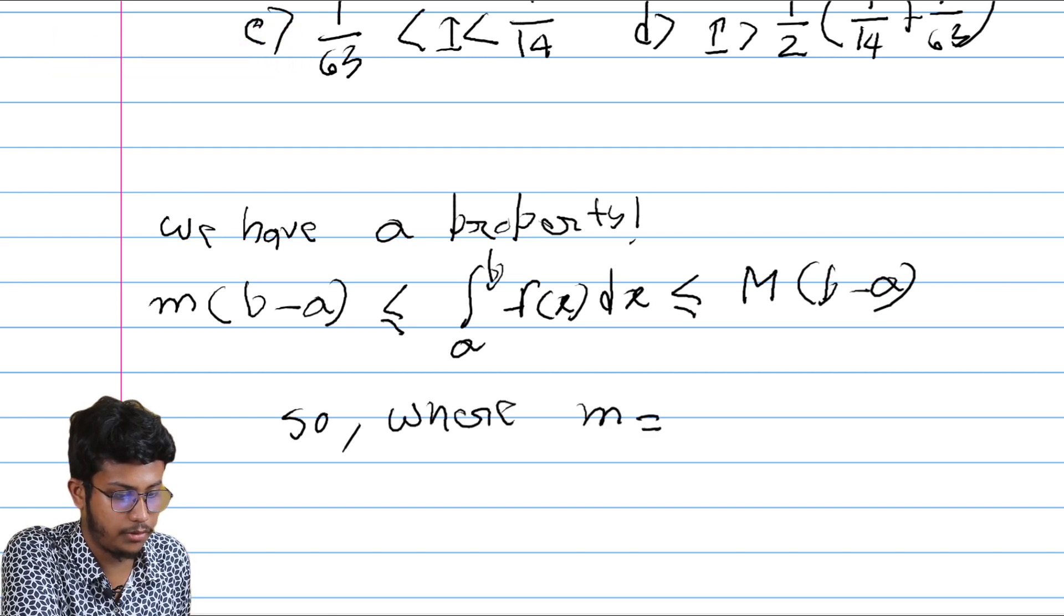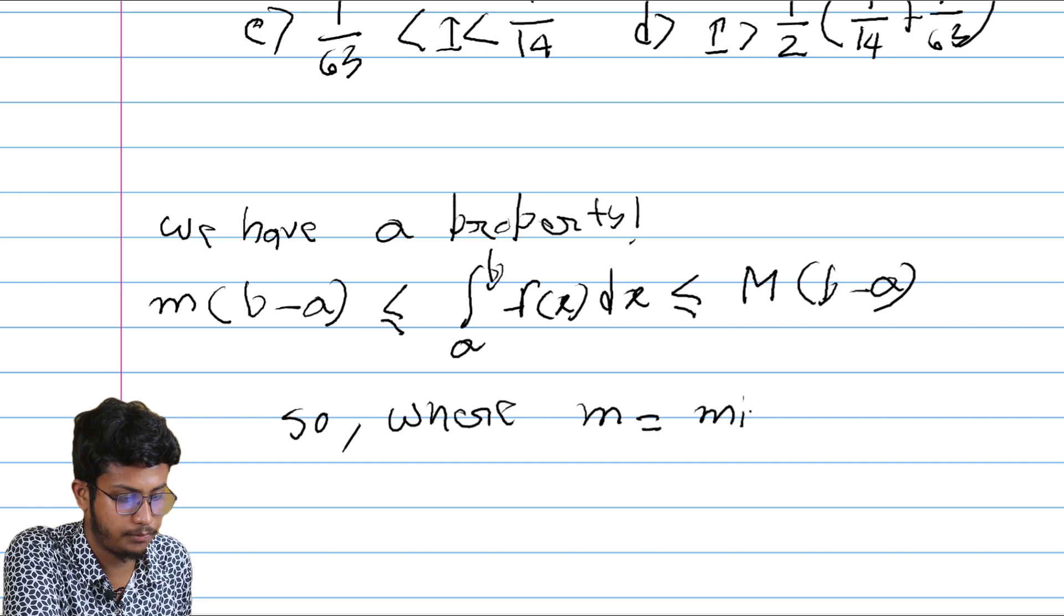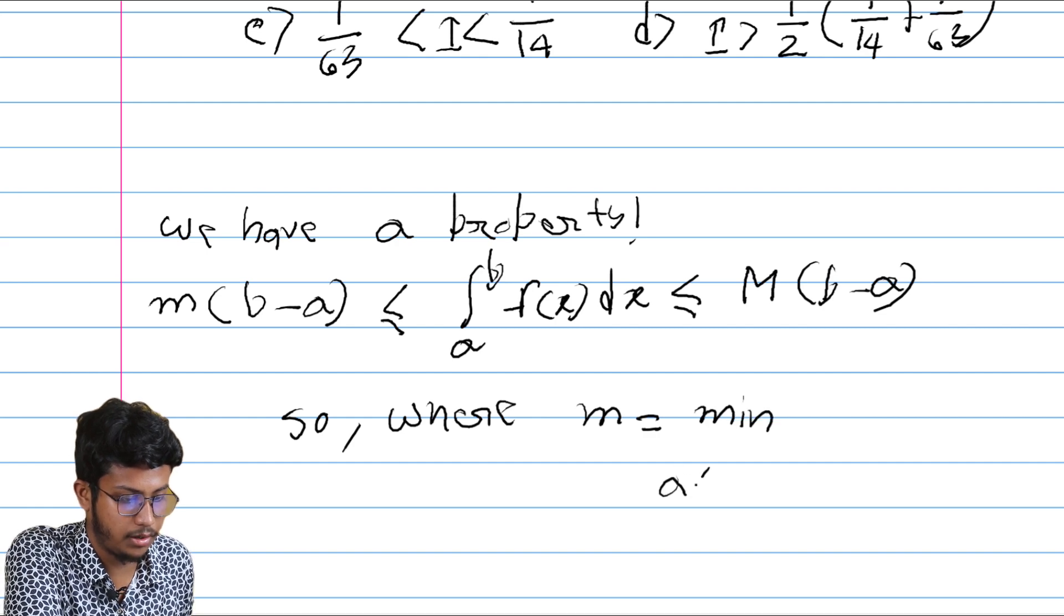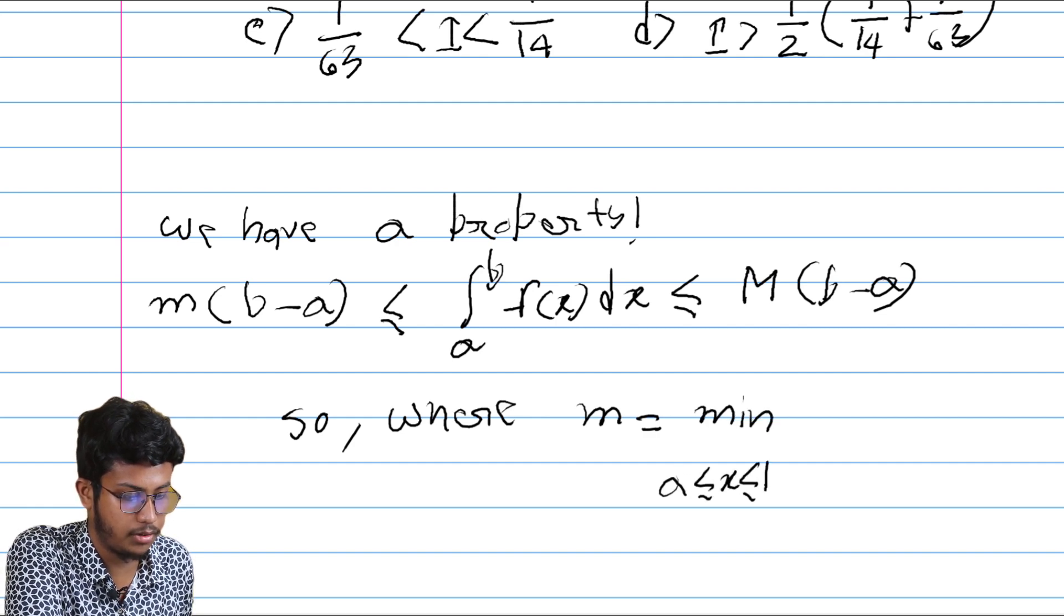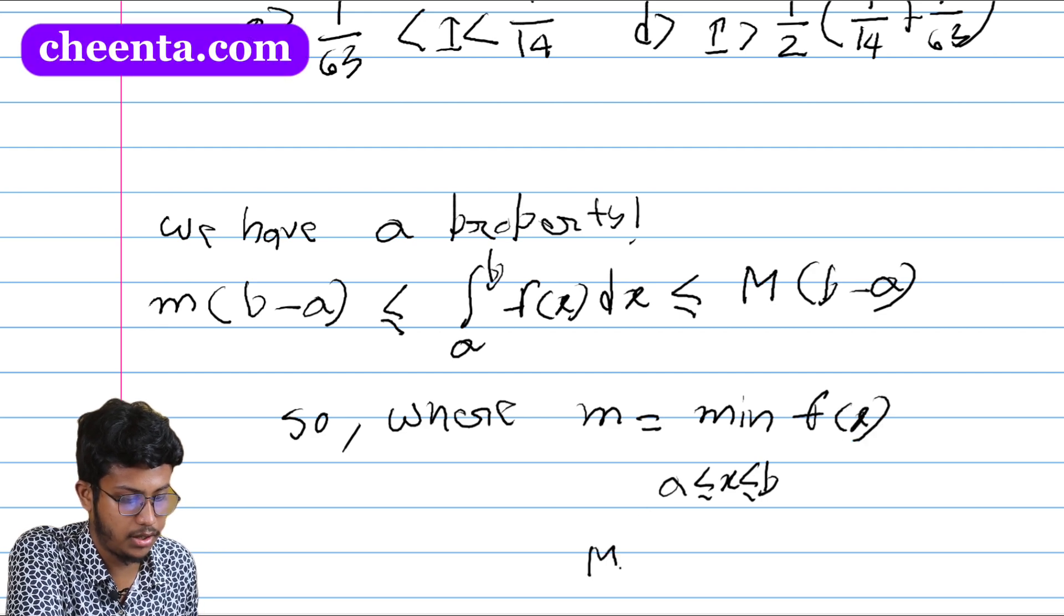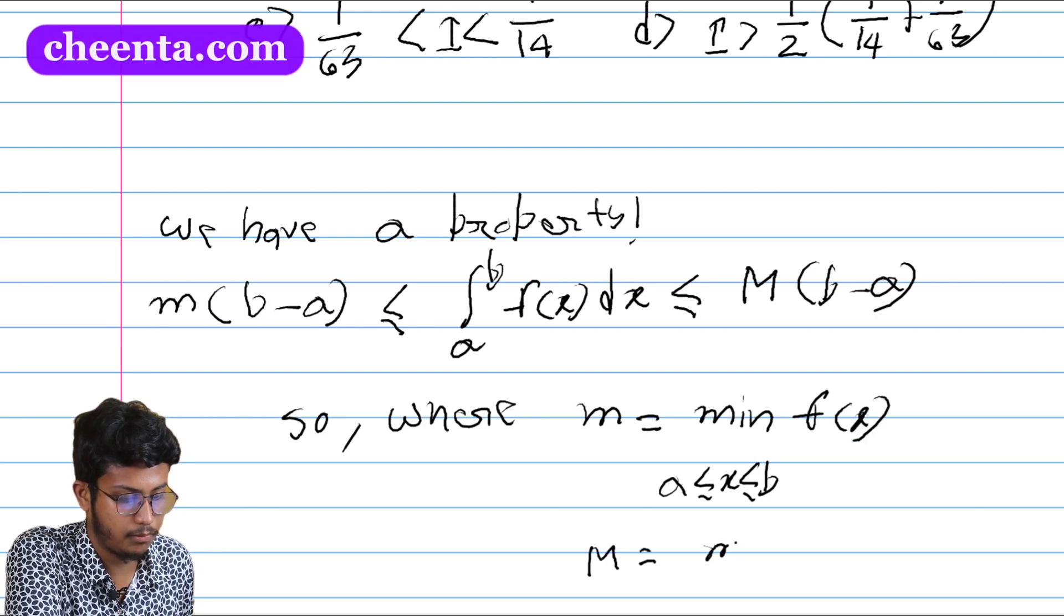So where capital, small m is equal to minimum a less than equal to x less than equal to b f(x) and capital M is equal to maximum of a less than equal to x less than equal to b f(x).